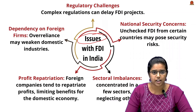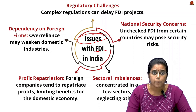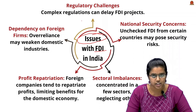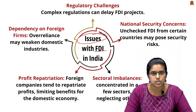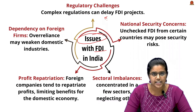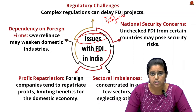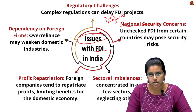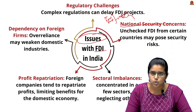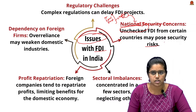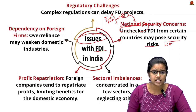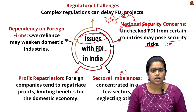Issues related to FDI in India: First is regulatory complexity — complex regulations can delay FDI projects, which is why automatic routes were introduced for sectors like IT services and single-brand manufacturing. Second is the national security concern — in the automatic route, FDI is allowed without a thorough checking process, which can pose security risks in some cases.